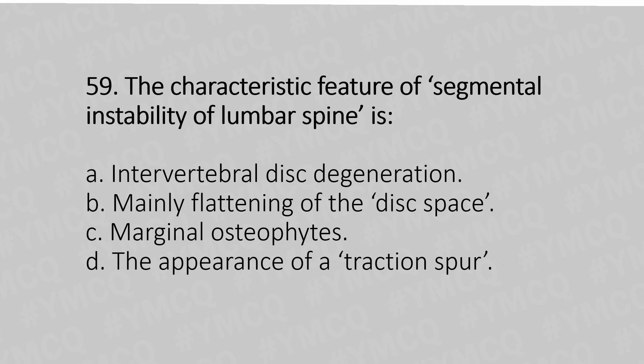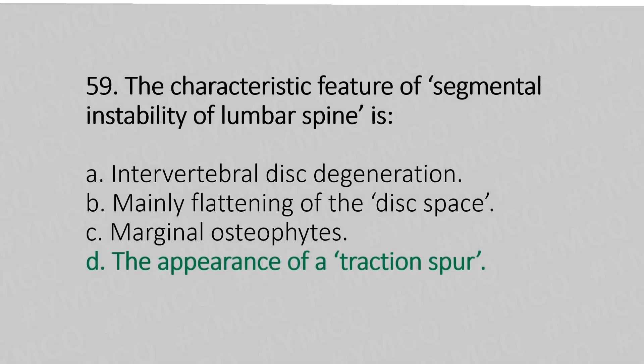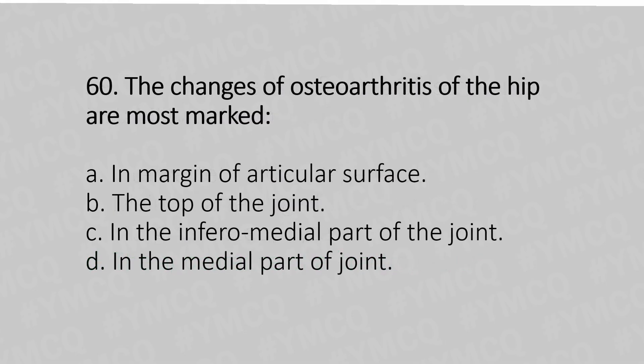Now let's move to question number 59. The characteristic feature of segmental instability of the lumbar spine is: option A, invariable disc changes; option B, mainly flattening of the disc space; option C, marginal osteophyte; option D, appearance of the traction spur. And the answer is option D: the appearance of the traction spur.